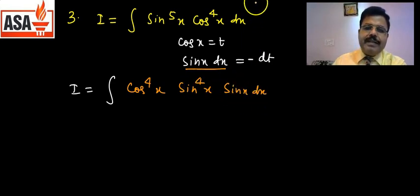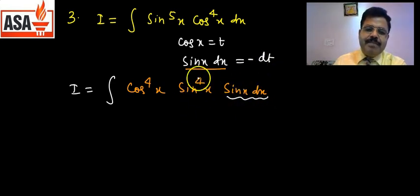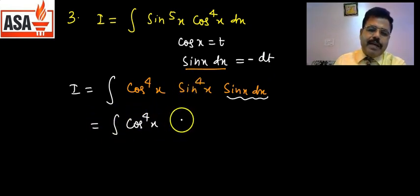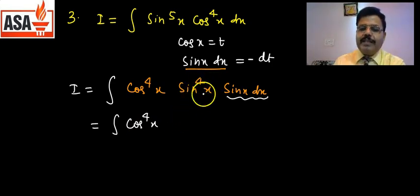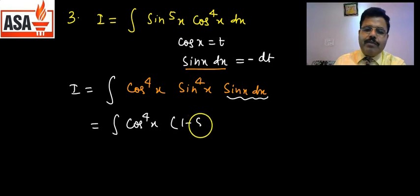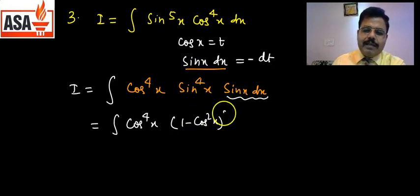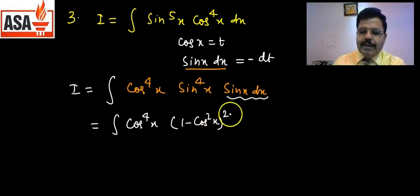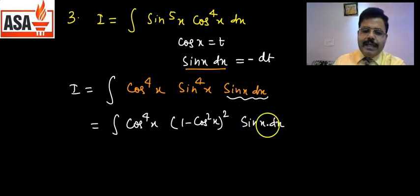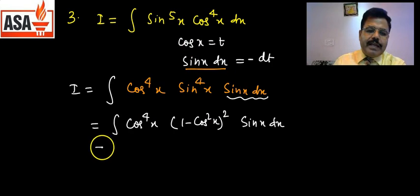sin⁵x·sinx dx के बदले minus dt। sin⁴x को cos में convert करना है: sin⁴x = (sin²x)² = (1 − cos²x)²। तो यह हो गया (1 − cos²x)²·sinx dx = (1 − cos²x)² × (−dt)।